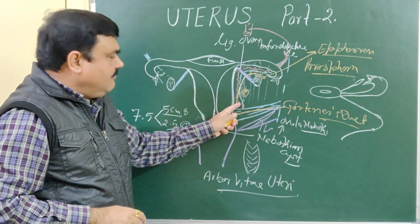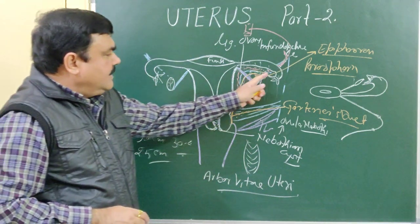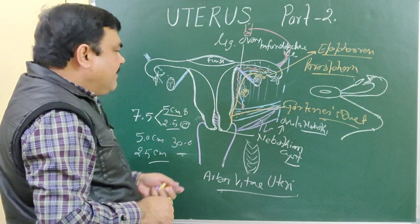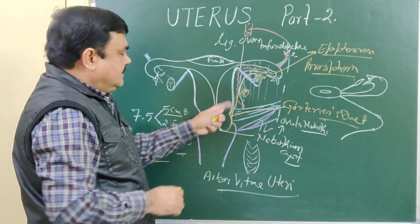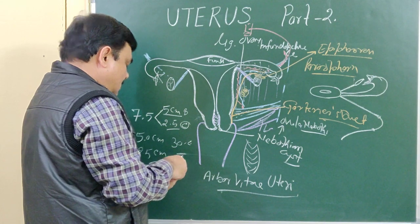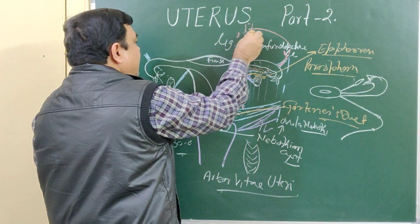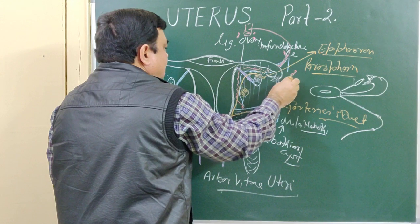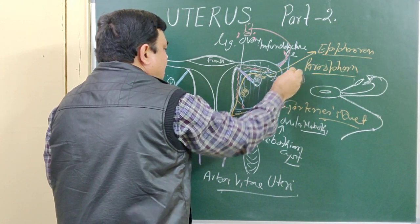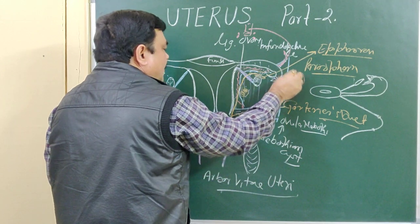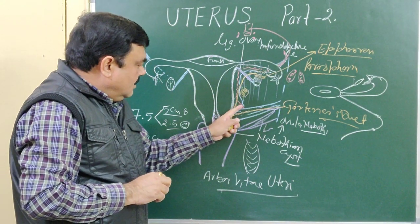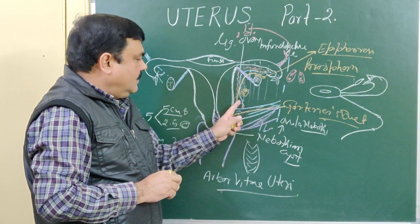Venous drainage is mainly through the uterine vein, and some part drains through the ovarian vein. Lymphatics drain into the para-aortic group of lymph nodes and the external and internal iliac groups of lymph nodes, along with the uterine vessels.